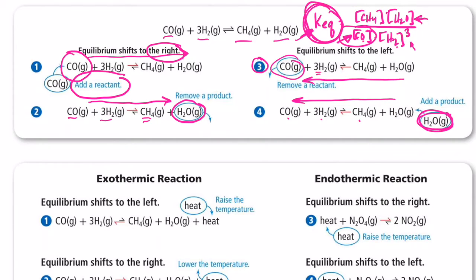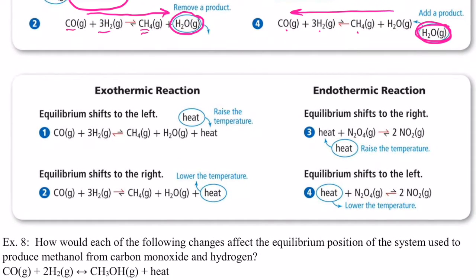We can also shift right or left by changing temperature. When temperature changes, the equilibrium constant will change as well — that's the only thing that will change the value of Keq. For an exothermic reaction, heat is being produced, symbolized with ΔH.